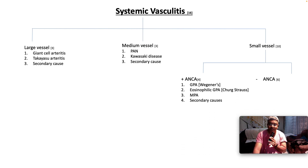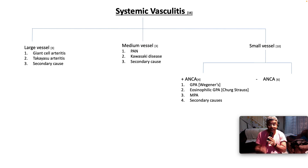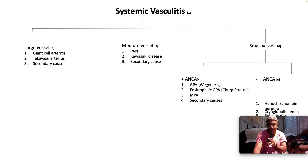Small vessel ANCA-positive vasculitic syndromes: granulomatosis with polyangiitis, previously called Wegener's granulomatosis; eosinophilic granulomatosis with polyangiitis, previously termed Churg-Strauss syndrome; then microscopic polyangiitis; and secondary causes.